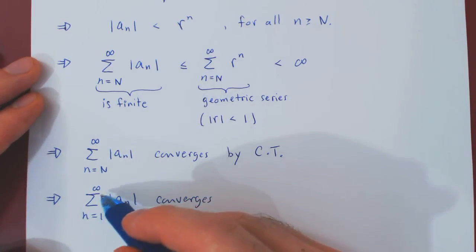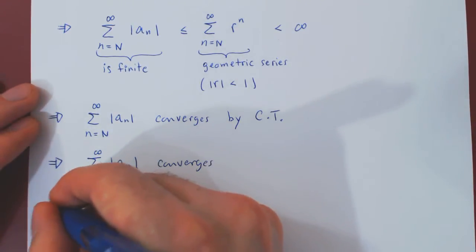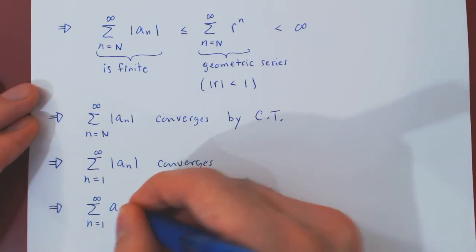But of course, if a series of terms in absolute value converges, this is by definition a statement that the series without the absolute value is called absolutely convergent.